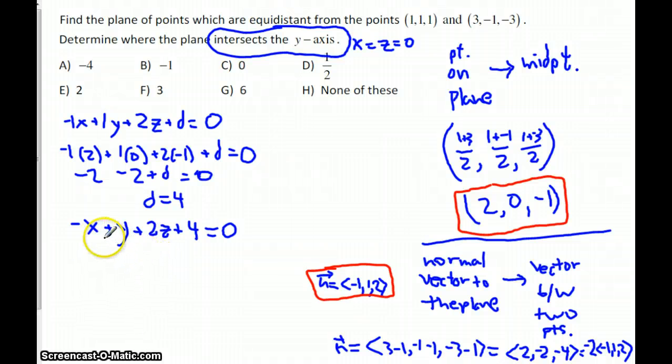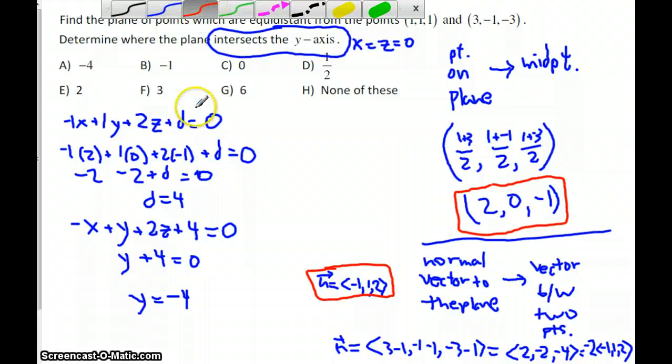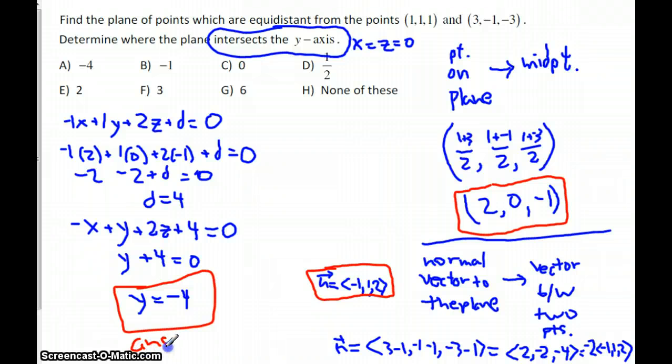And so, x and z are both 0, so y must be negative 4. y plus 4 is 0. So, y is negative 4. Very good. Letter A. And that's our answer to the question. Good job. Thank you.